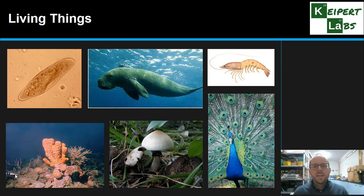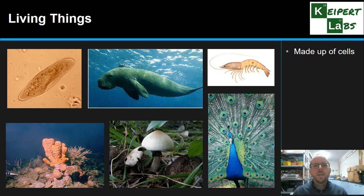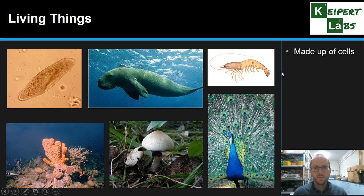So firstly looking at living things. We're going to unpack this a little bit further in the next video looking at their characteristics, but essentially all living things are made up of cells. They may be a single cell like the bacterium that we've got over here, or there may be complex multicellular organisms like the plants and animals and fungi that we see here.